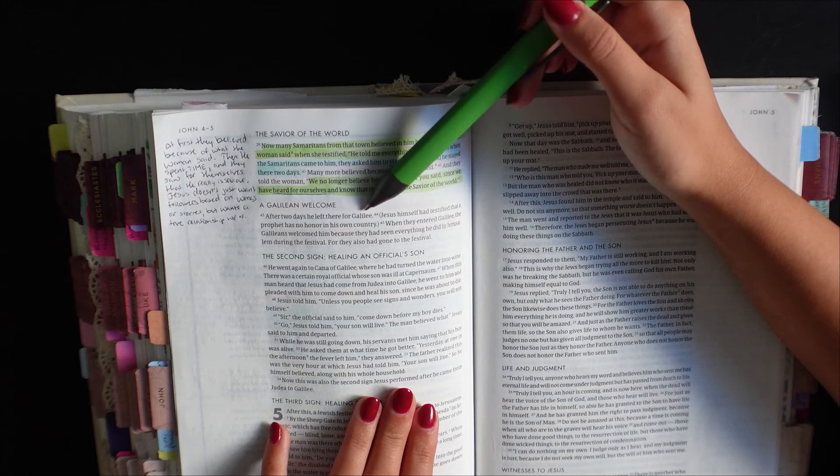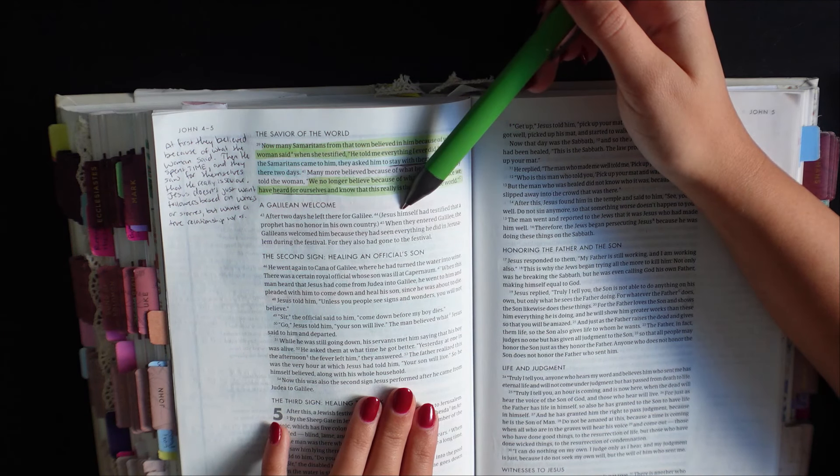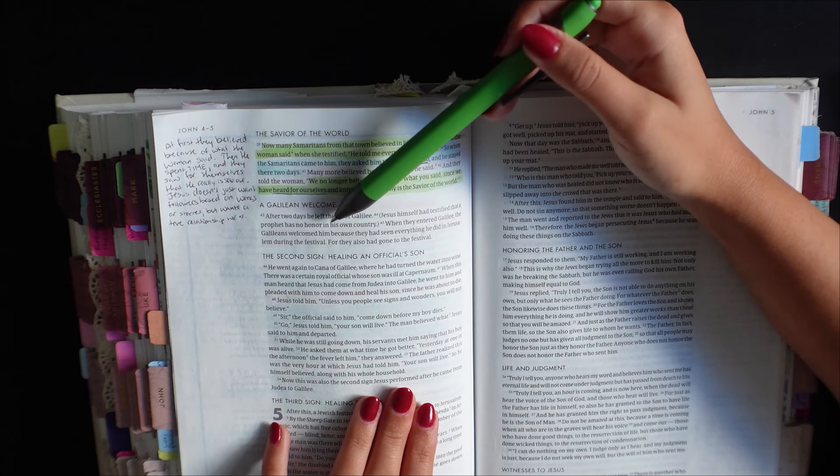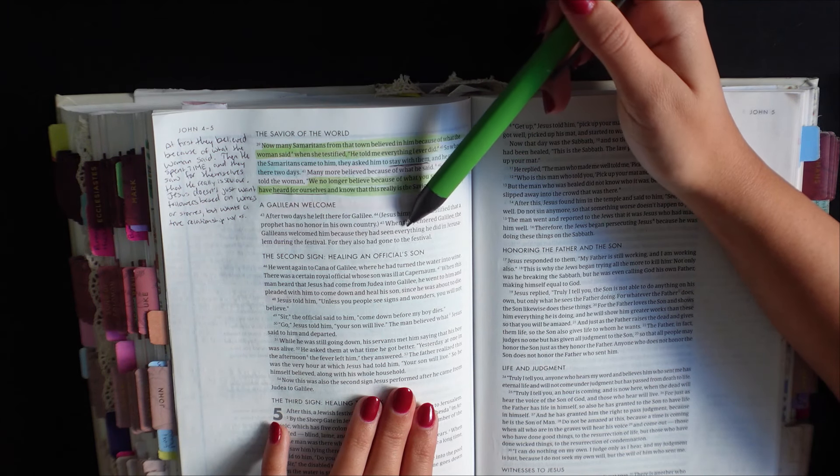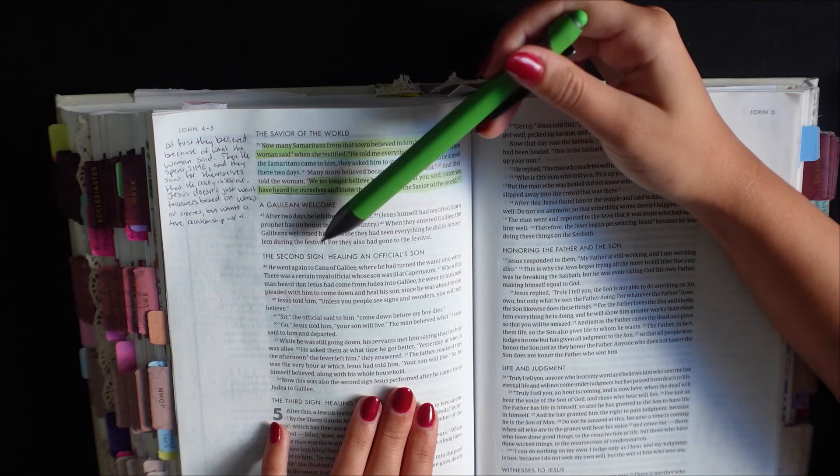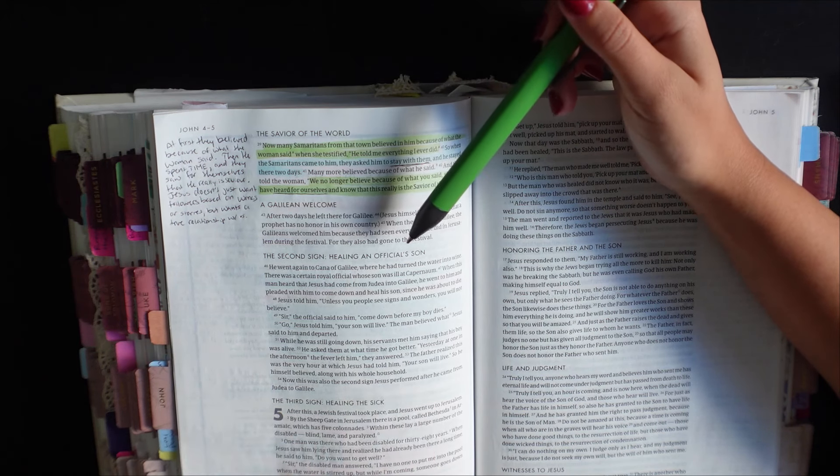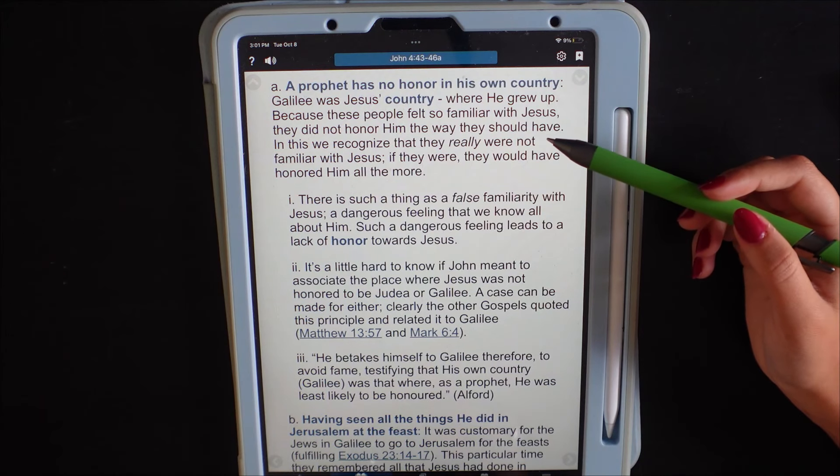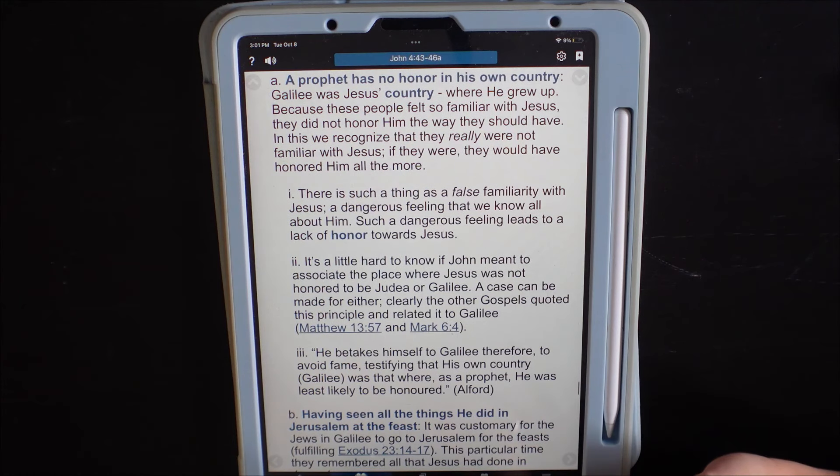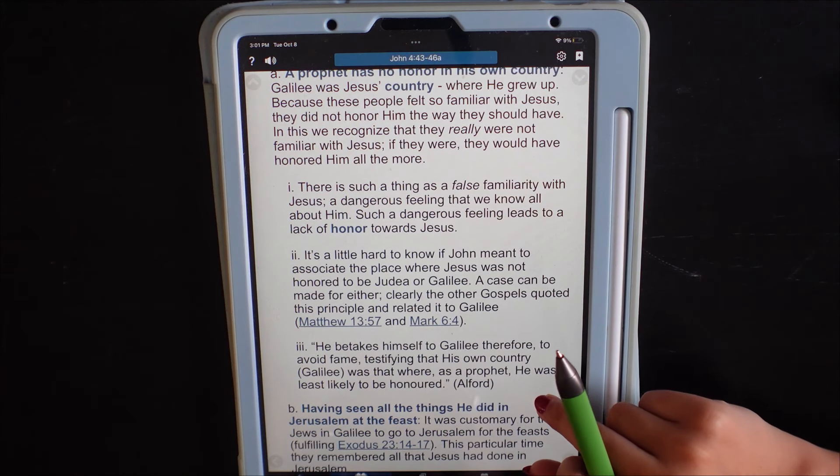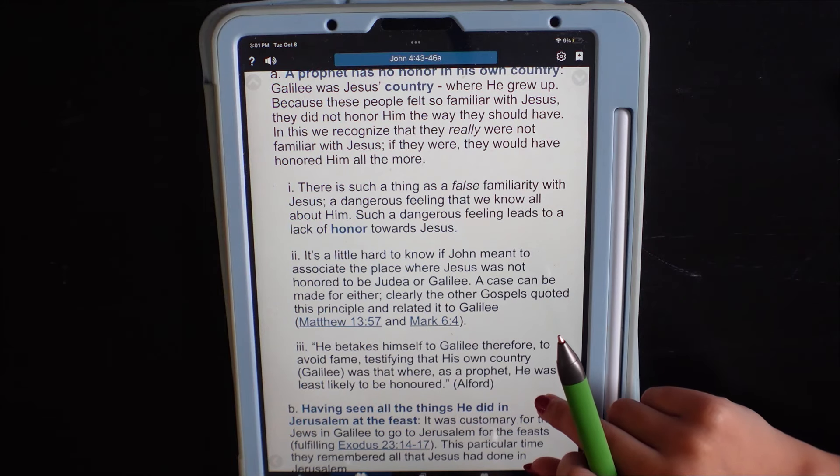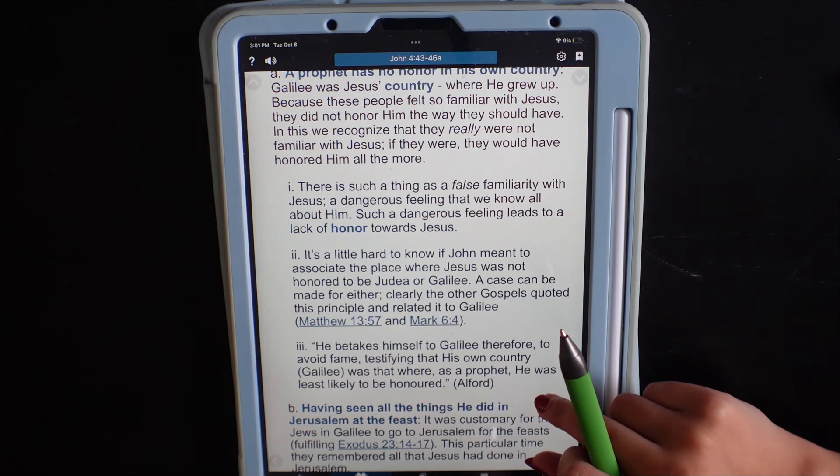After two days, he left there for Galilee. Jesus himself had testified that a prophet has no honor in his own country. When they entered Galilee, the Galileans welcomed him because they had seen everything he did in Jerusalem during the festival, for they had also gone to the festival. The prophet has no honor in his own country. Galilee was Jesus's country where he grew up. Because these people felt so familiar with Jesus, they did not honor him the way they should have. In this, we recognize that they really were not familiar with Jesus. If they were, they would have honored him all the more.